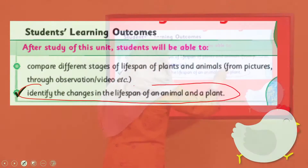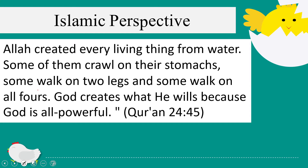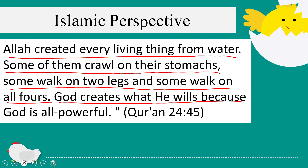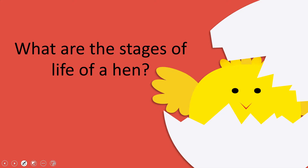Let's quickly look at the Islamic perspective. Allah created every living thing from water — some of them crawl on their stomachs, some walk on two legs, and some walk on all fours. God creates what He wills, because God is all-powerful. So, what are the stages of the life cycle of a hen? Let's quickly talk about that.